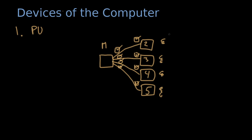One important thing to notice here is that this model works both on a single computer with multiple processors, and it works as a distributed system. So this processing unit here can be hosted separately — one place in one computer, and the other three hosted on another computer.